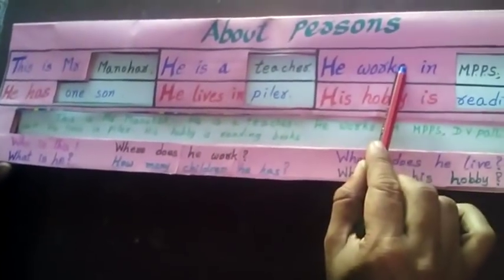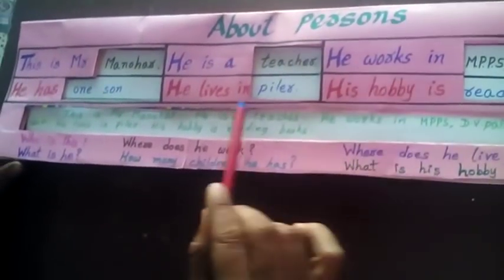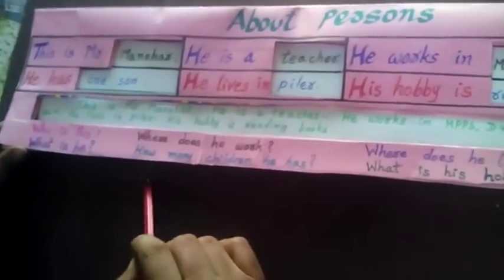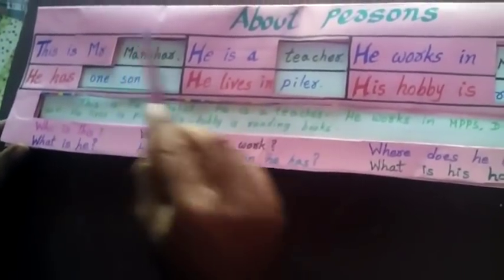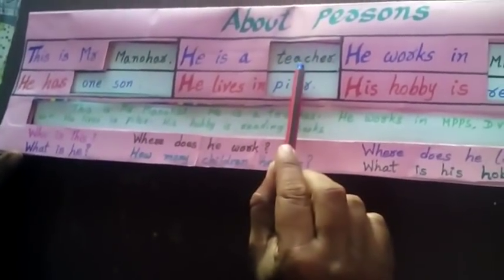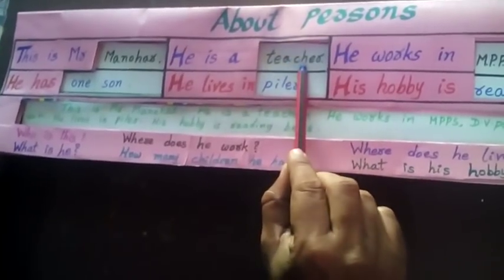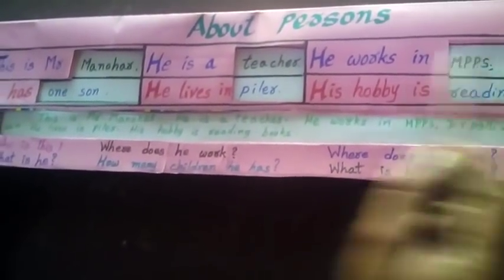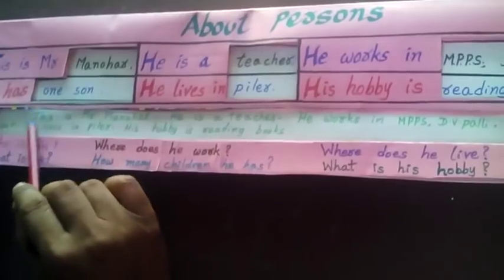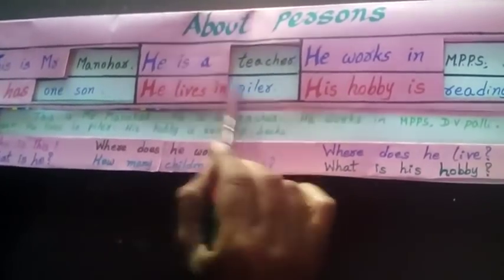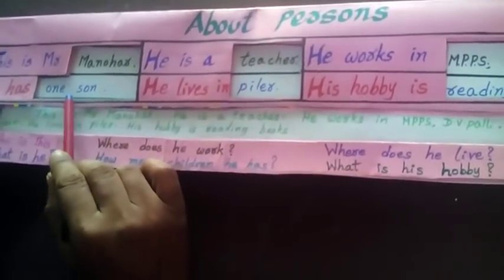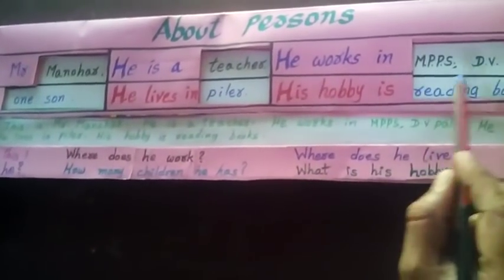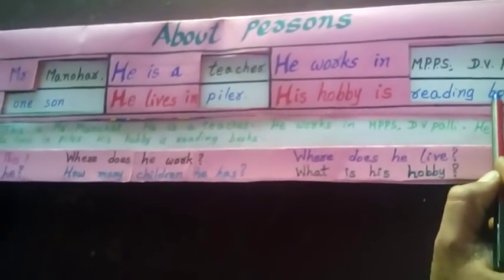This is about persons. Using this TNM, children can read about persons. What are they? Who is he or she? What is he or she? Where does he or she work? Where does he or she live? How many children does he or she have? What are his or her hobbies?